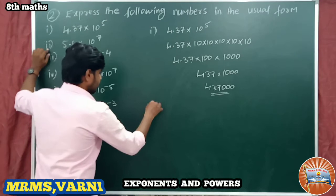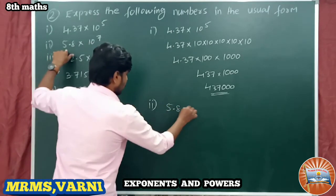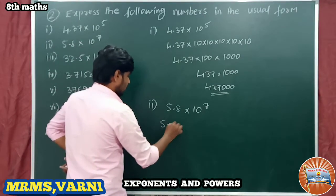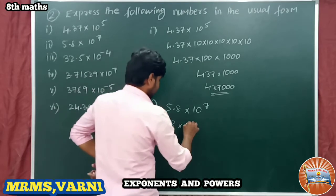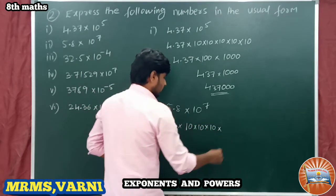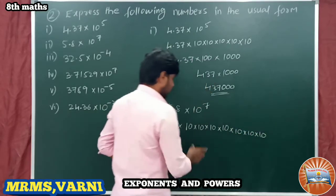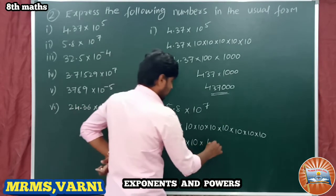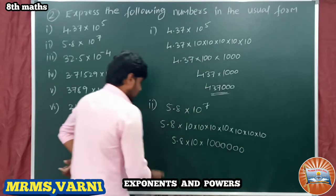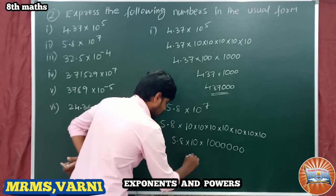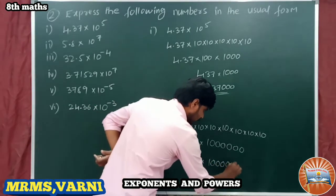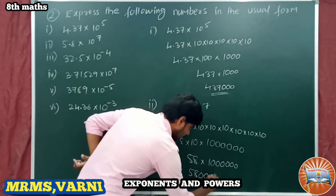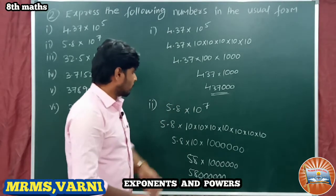Next, problem number 2: 5.8 into 10 power 7. So 5.8 into 10^7 — we write 10 into 10 into 10 into 10 into 10 (seven times). We write 5.8 into 10, remaining 6 tens gives 1 followed by six zeros. Multiplying 5.8 into 10 gives 58, then 58 with six zeros becomes 58000000. That is the usual form of 5.8 into 10 to the power 7.